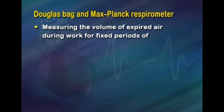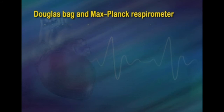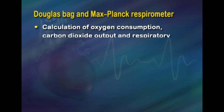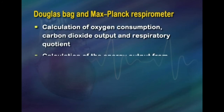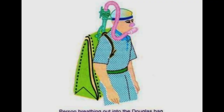Indirect calorimetry for measuring energy metabolism during work can be determined using equipment like the Douglas bag and Max Planck respirometer. The general principles are: measuring the volume of expired air during work for fixed periods of 5 to 10 minutes; collection of samples of expired air for analysis of oxygen and carbon dioxide content; calculation of oxygen consumption, carbon dioxide output, and respiratory quotient; and calculation of energy output from the respiratory quotient and oxygen consumption.